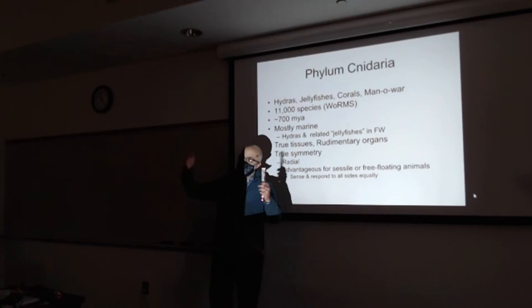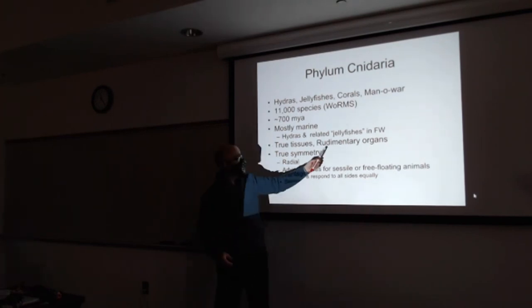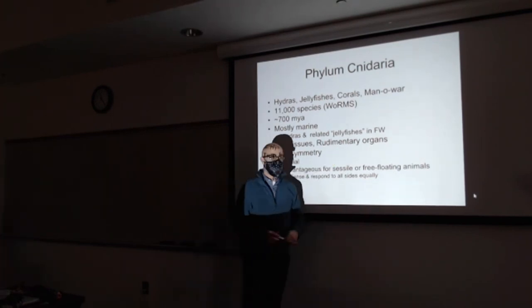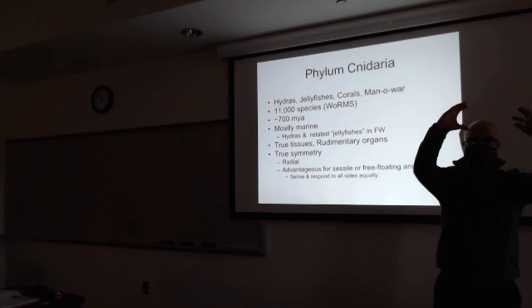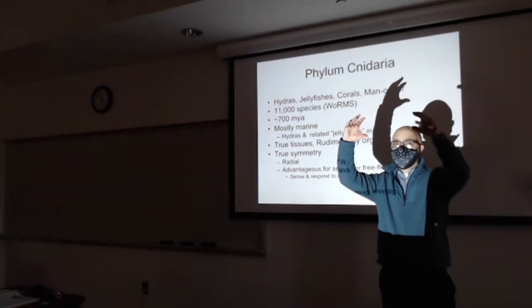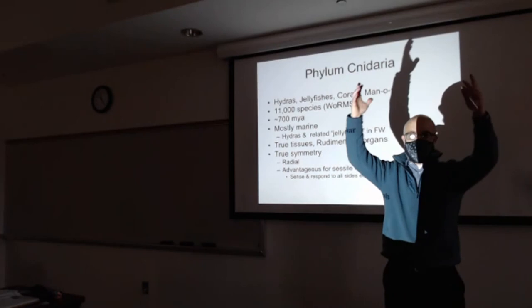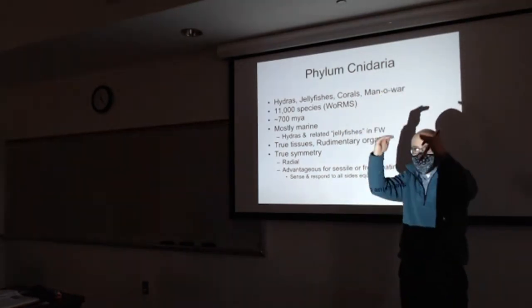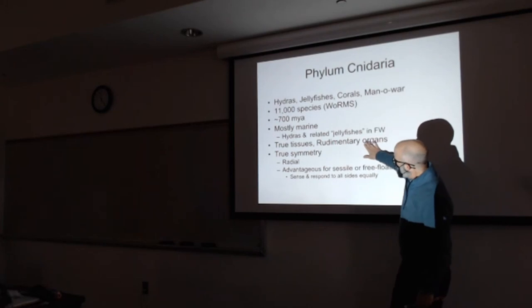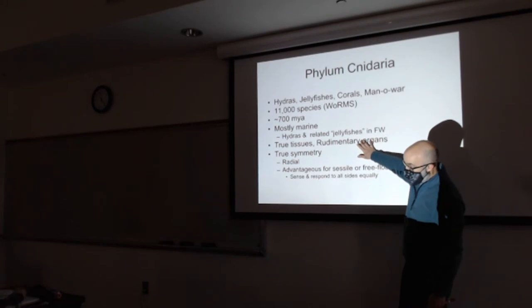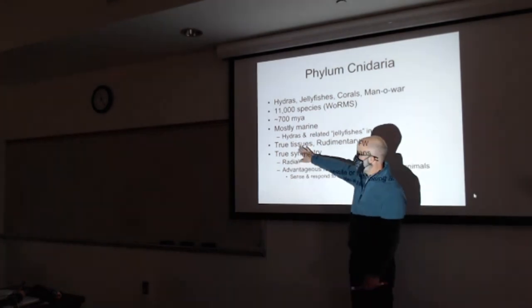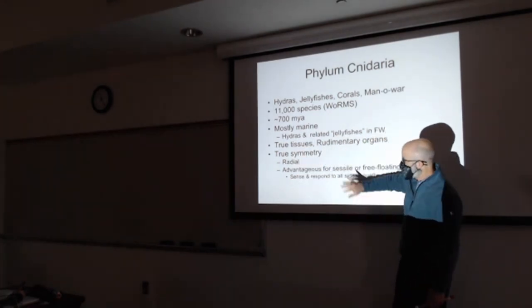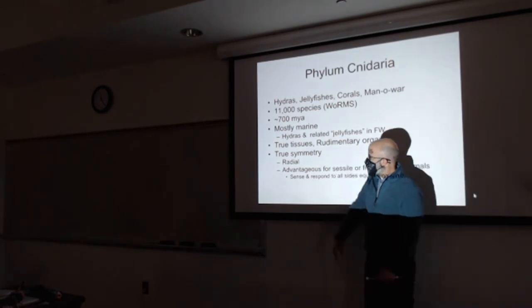They have tissue. Remember, that's a jump up from the sponges. And they have even some rudimentary organs. Cells aggregate into tissues. Tissues aggregate into organs. Organs work together in systems, and then organisms and so on. Life is hierarchical like this. These guys are sort of down at that low end of animals. They have tissue, rudimentary organs, no organ systems.